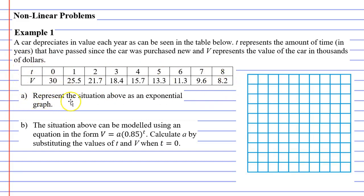Question A says: represent the situation above as an exponential graph. When we look at the top row of our table of values, we've got T, which goes as high as 8. So the top row is going to be our horizontal axis. We'll label this axis as T, and we need to get as high as the number 8, so we'll go up by one number at a time.